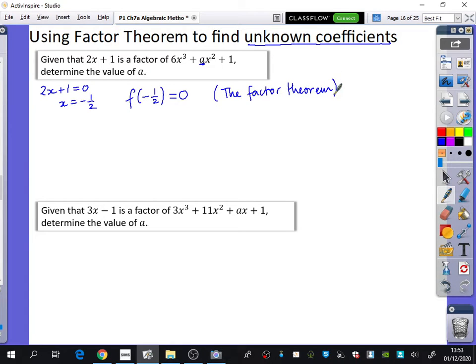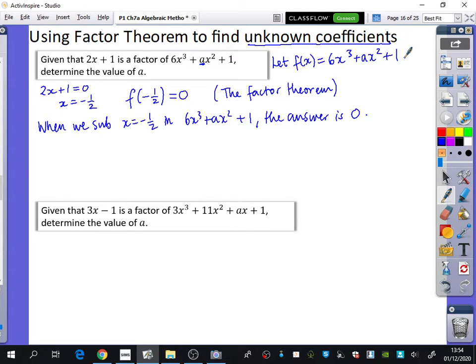If you ever use the factor theorem, why not just spend 2 seconds writing the 3 words 'the factor theorem' in brackets? It's just telling everyone you know what you're doing. When we substitute x equals -1/2 into 6x³ + ax² + 1, I can't really use that f notation unless I've introduced what the f notation is actually representing.